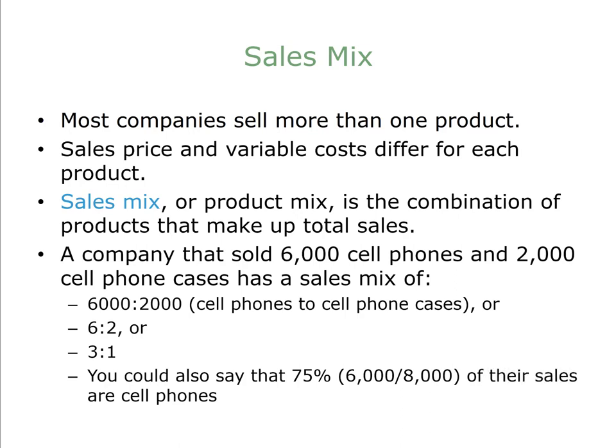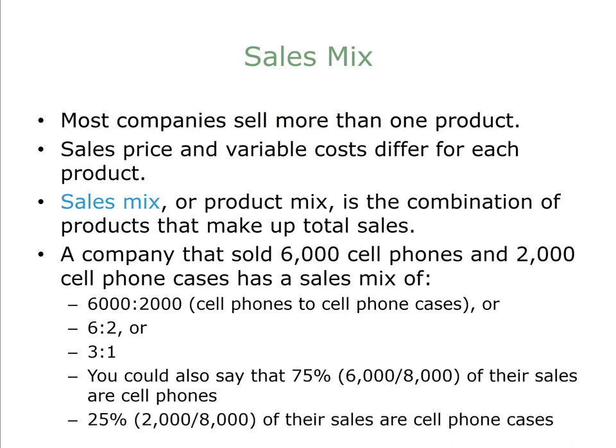Another way to look at this company's sales mix is to say 75% of their sales are cell phones — 6,000 cell phones divided by the total number of items sold, which was 8,000 — and 25% of their sales are cell phone cases.